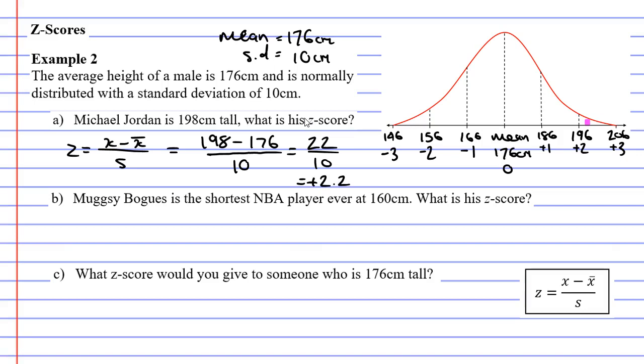To be more specific, it's positive 2.2. Which sounds about right, because when we look at our bell curve, we can see that it lies slightly above the 2. When we look at question B, Muggsy Bogues is the shortest NBA player ever at 160 centimeters. What is his Z score?